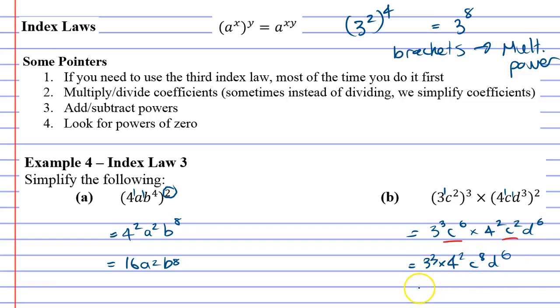We can go an extra step. The 3 to the power of 3 times the 4 squared—we can actually just type that in our calculator. 3 to the power of 3 times 4 squared gives us 432. It just looks a lot nicer if we write it as one whole number. We work out the number part and then write C to the power of 8 and D to the power of 6 next to it.